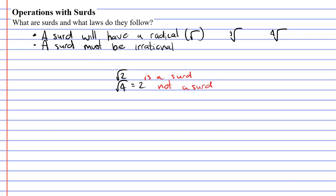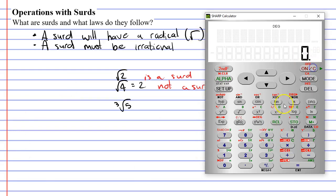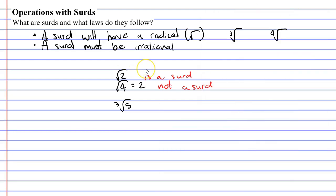All right, what about cube roots? Let's say we have the cube root of five. Bringing up our calculator, the cube root of five, you'll notice that it has a decimal that goes on forever and has no repeating pattern. So we can say that this is a surd.